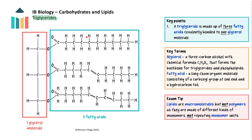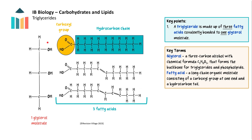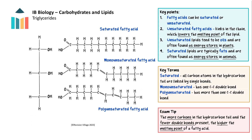Triglycerides are made up of three fatty acids attached to a glycerol molecule. Glycerol is an alcohol. Each fatty acid molecule is made up of two parts: the carboxyl group and a hydrocarbon chain. The hydrocarbon chain can be saturated or unsaturated. When there is one carbon-carbon double bond, they are called monounsaturated. If they have more than one double bond, they are polyunsaturated.